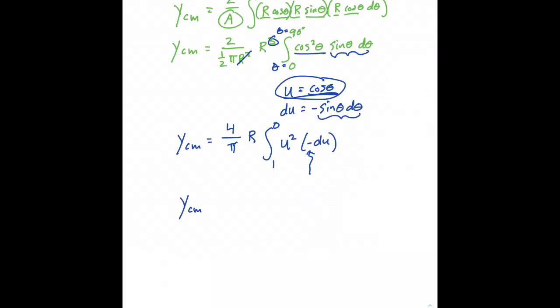The location of the center of mass along the y-axis is equal to 4 over π times r times the integral of u² du evaluated from 0 to 1 and that's equal to 4 over π times r times ⅓u³ evaluated from 0 to 1 which just gives us ⅓.